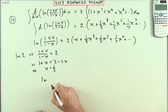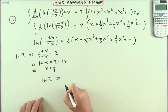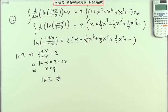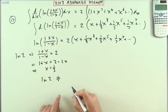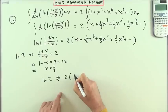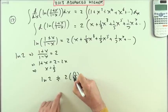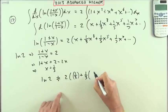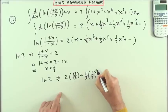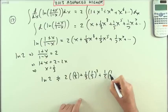So ln(2) should be approximately—I'm not going to go on forever doing this fun as it might be—2 times, replacing x by 1/3, so it'll be a third plus a third of (1/3)³, which is just a coincidence, plus a fifth of (1/3)⁵.